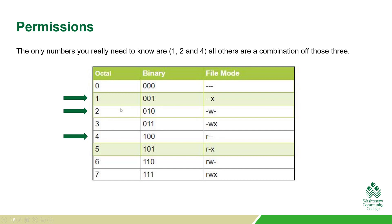If you know those three numbers, the rest is just combinations. For example, the number seven comes down to read, write, and execute — four plus two plus one. So every column for owner, group, and everyone else is going to have one of these numbers assigned to it when we do something called chmod, which you're going to see in just a second.